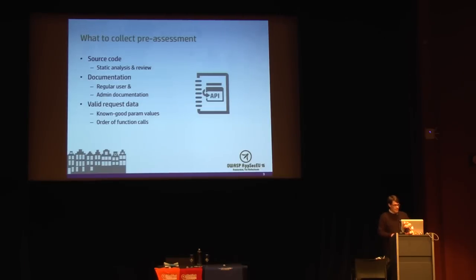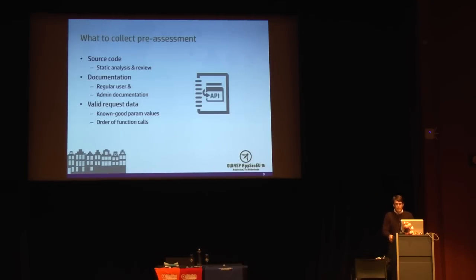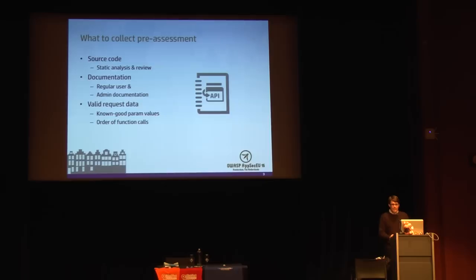A few things to collect: source code and documentation. From your customers, acquire known good requests so you know what values the APIs are expecting and how to make valid requests to your web services and back-end systems. A lot of times API testing is hard simply because testers don't know the order of operations or the specific parameter values the back-end is expecting. Acquire known good data through runtime traffic analysis — actually using the application and capturing traffic — and from documentation and customers directly.